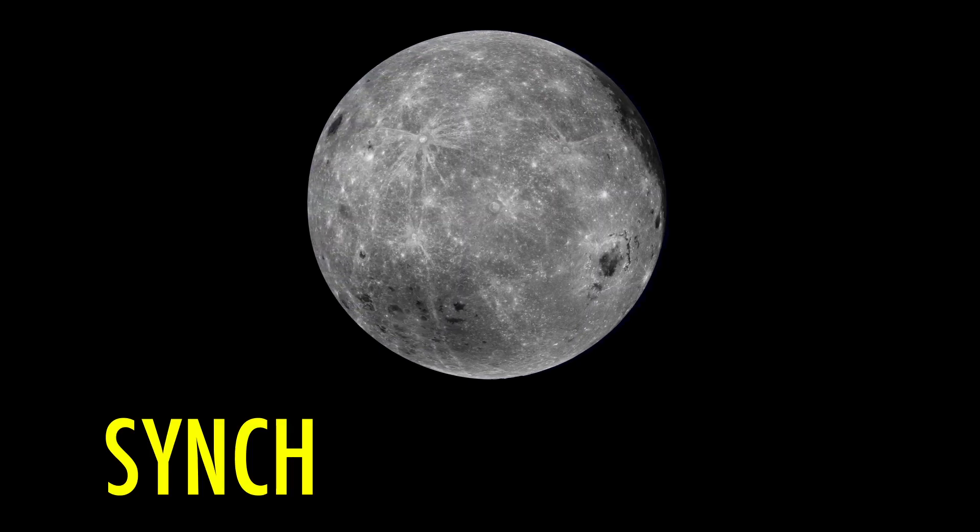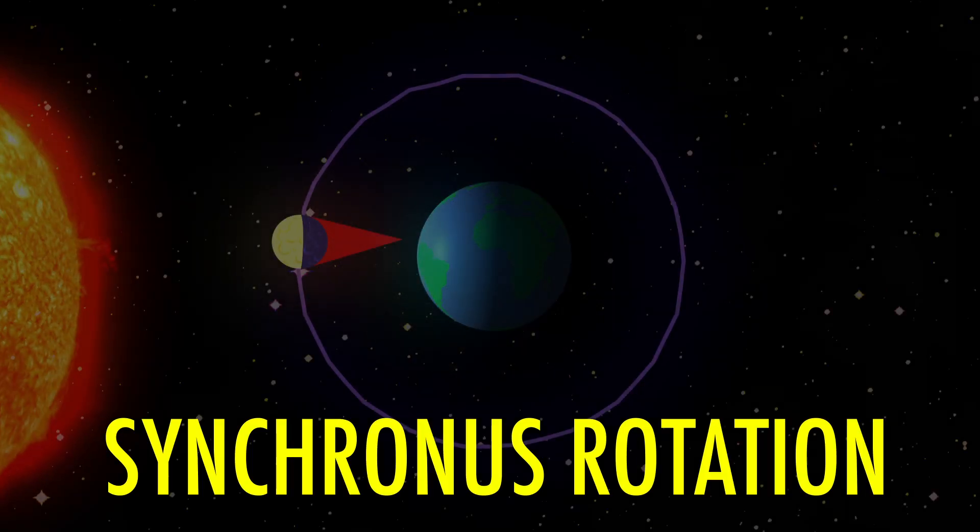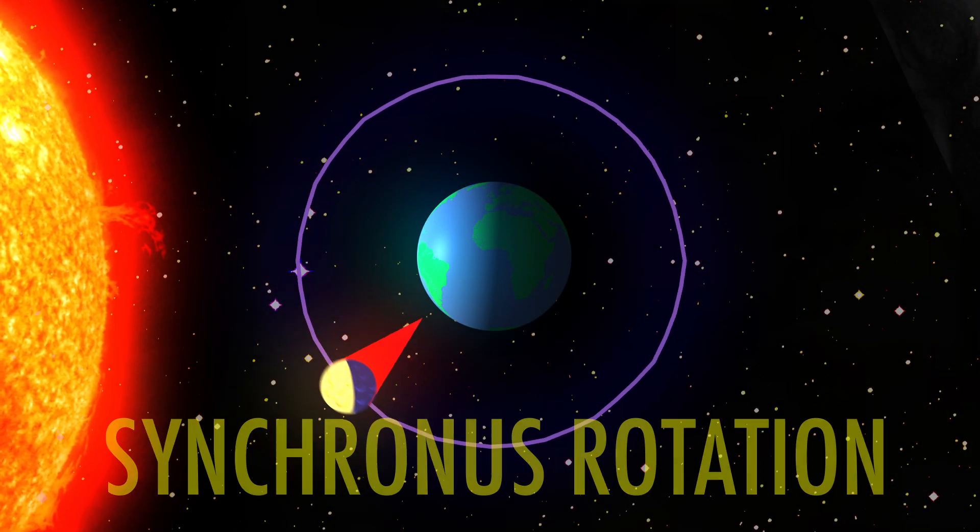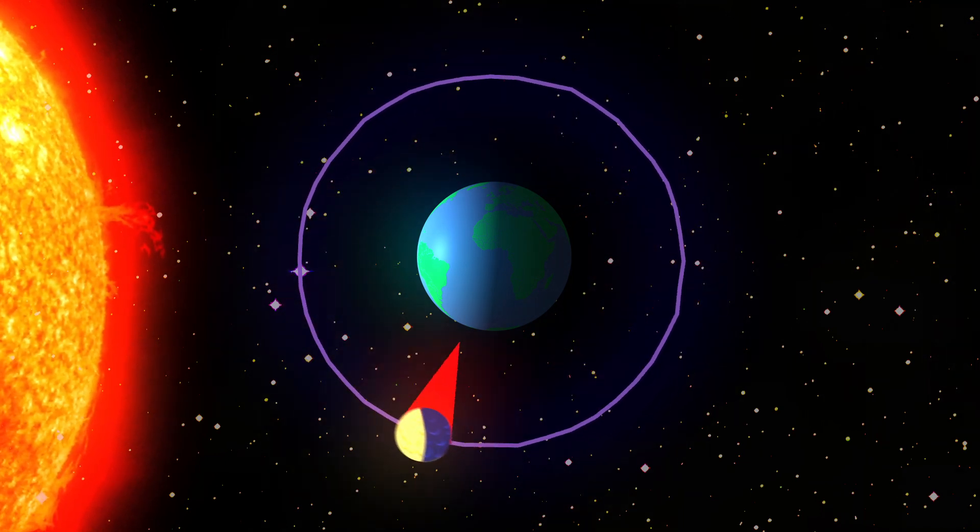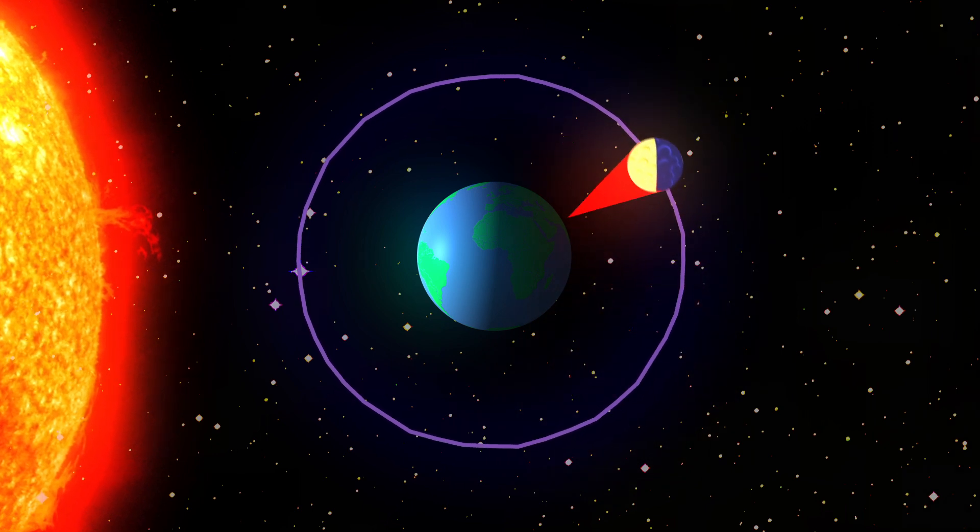Our moon has a synchronous rotation. Here's an example. We have the Sun and the Earth-Moon system. Our moon rotates on its axis while orbiting the Earth. It takes almost a month for it to do one full orbit around us.